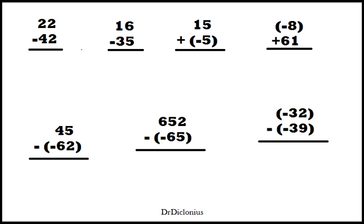So the first number here is 22 minus 42. Now as you can see, the smaller number is actually on top, whereas the bigger number is on bottom. And what I like to do in this kind of situation is I like to flip it.